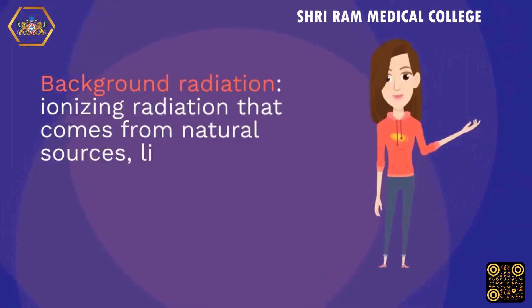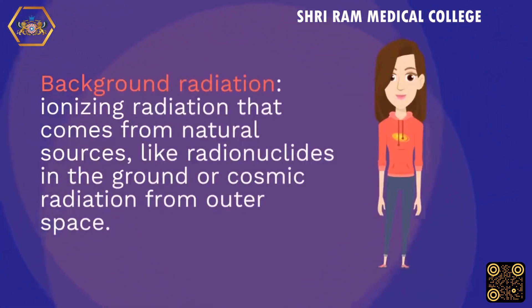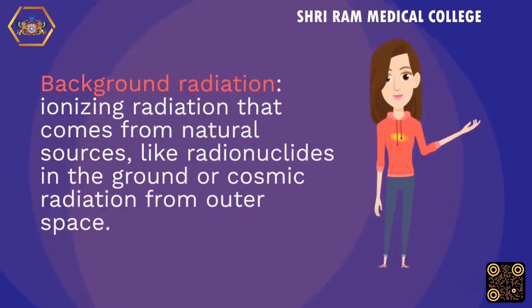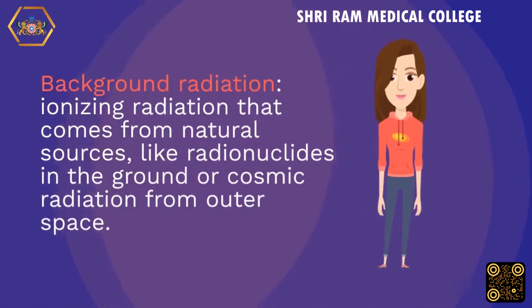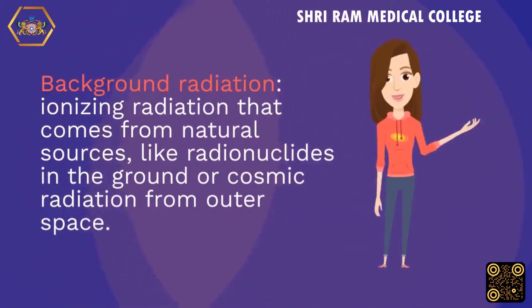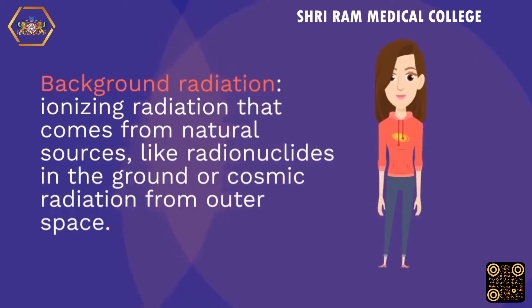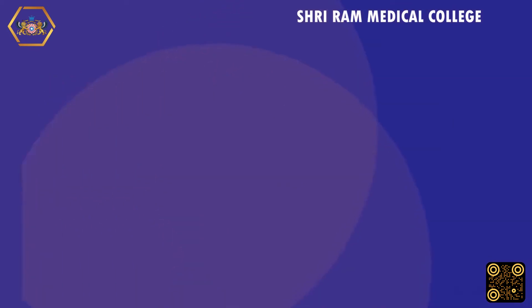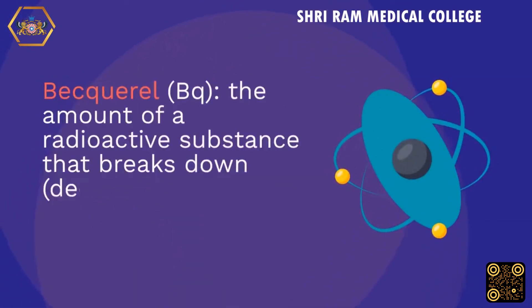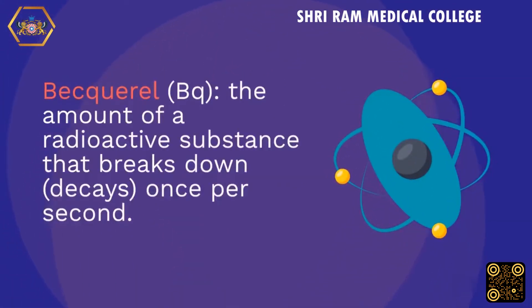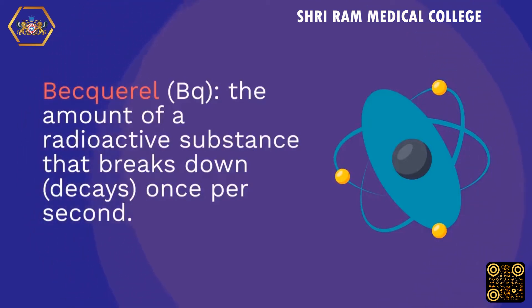Background radiation: ionizing radiation that comes from natural sources, like radionuclides in the ground or cosmic radiation from outer space. Becquerel (Bq): the amount of a radioactive substance that breaks down (decays) once per second.